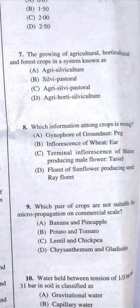Question 7: The growing of agriculture, horticulture, and forest crops in a system is known as — this is from our agroforestry course. The answer is C, agri-silvi-pastoral system. Silvic means trees/horticulture, agri means agricultural crops, and pastoral means grasses.